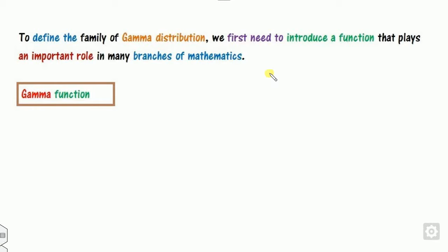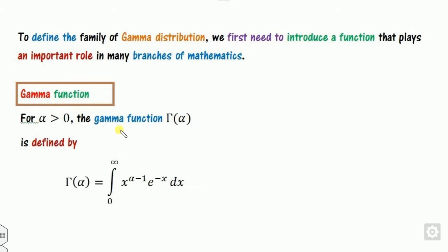Before starting the gamma distribution, we need to understand how this function is introduced and what role the gamma function plays in probability and statistics. We will first define the gamma function, which is a very important function with many applications in different areas of probability and statistics. The gamma function is defined as an improper integral from 0 to infinity of x raised to the power alpha minus 1 times e to the minus x.